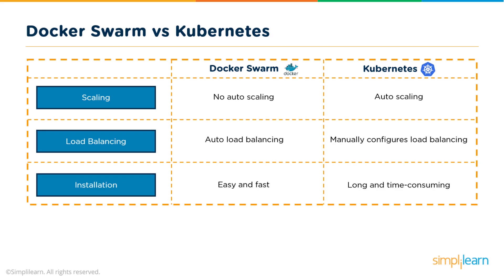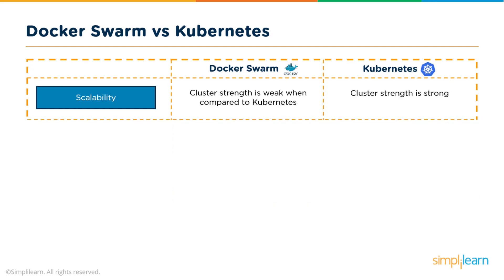The installation for Docker Swarm is really fast and easy — you can be up and running within minutes. Kubernetes takes a little more time and is more complicated. It's not going to take days and weeks, but Docker Swarm is much easier to get up and running. What's interesting is that Kubernetes is incredibly scalable, and that's its real strength — its ability to have strong clusters — whereas Docker Swarm's cluster strength isn't as strong when compared to Kubernetes. Kubernetes really does have the advantage for scalability, as it was designed by Google to scale up and support Google Cloud Network infrastructure.